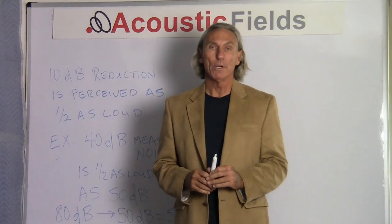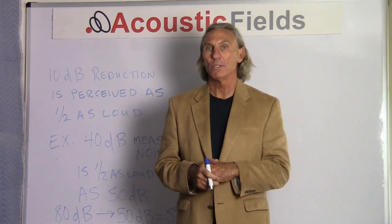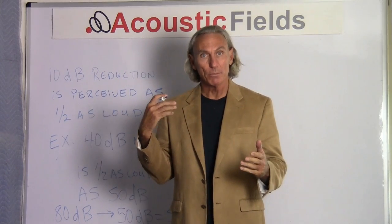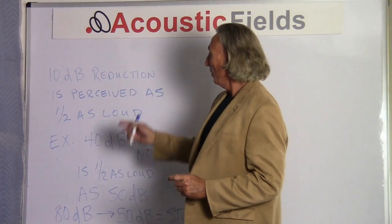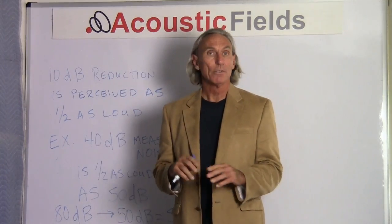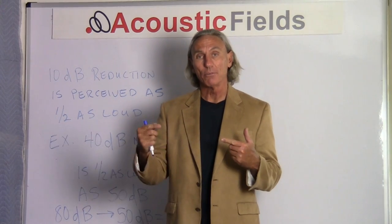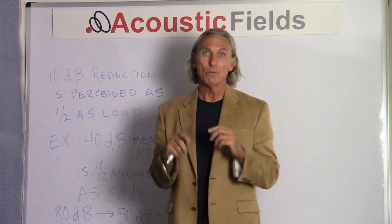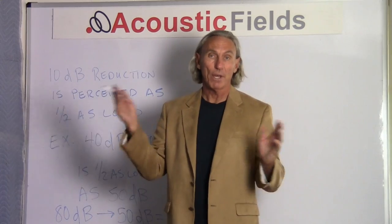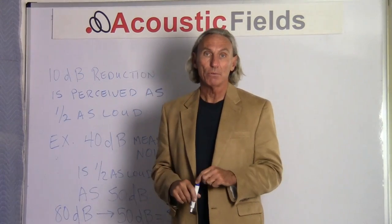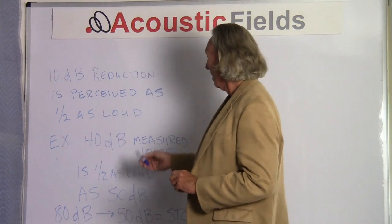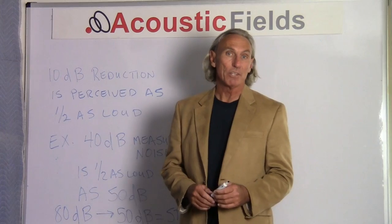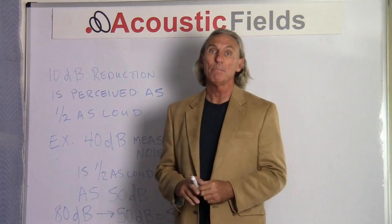Let's put some numbers to Sound Transmission Class and try to get a feel for barrier technology — how it's really measured and what it means to us in terms of perception of sound, in terms of loudness. A 10 dB reduction is perceived as half as loud. It's not linear, it's logarithmic. So a 10 dB reduction in noise is perceived as being half as loud. If our barrier reduces noise levels by 10 dB measured from one side to the other, it will be perceived by the people in the structures as half as loud. If we take 40 dB of measured noise, we know that it's half as loud as 50 dB of measured noise. Just that 10 dB difference contributes a lot to perception and how we hear sound.